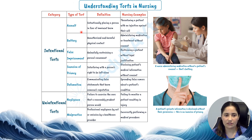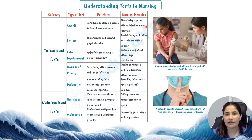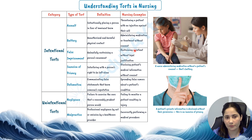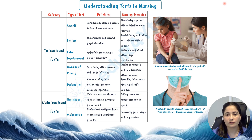Looking at intentional torts: assault is about making a patient fear imminent harm, like threatening a patient to perform a procedure against their will. Battery involves unauthorized contact, such as administering treatment without patient consent — the small difference is that assault is just the threat while battery involves actually performing the procedure. False imprisonment occurs when restraining a patient without legal grounds. Invasion of privacy includes disclosing patient information without consent.